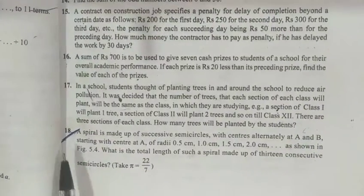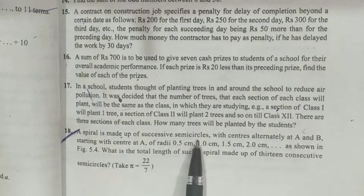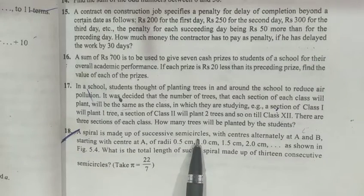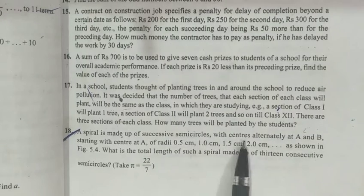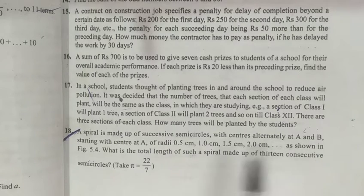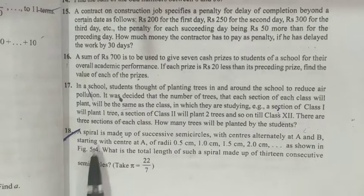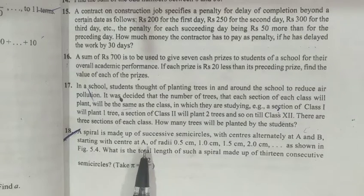Exercise 5.3, Question number 18. A spiral is made up of successive semicircles with center alternately at A and B. So first the center is A, then B, it keeps changing.